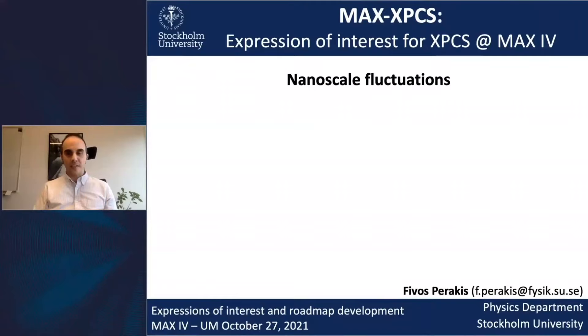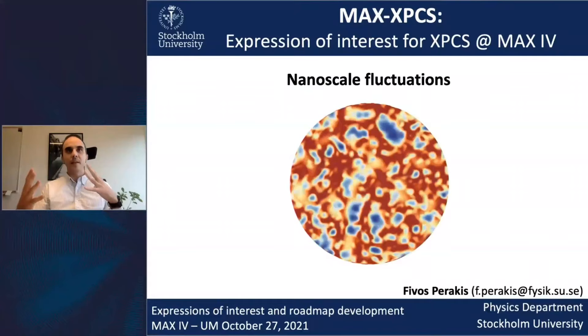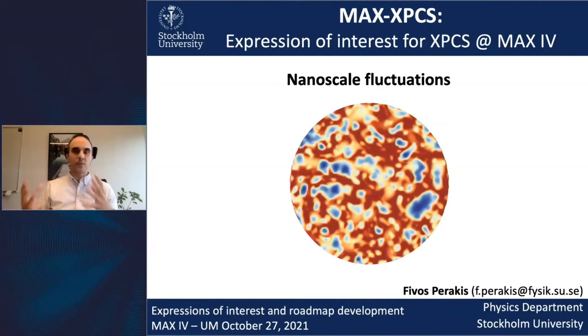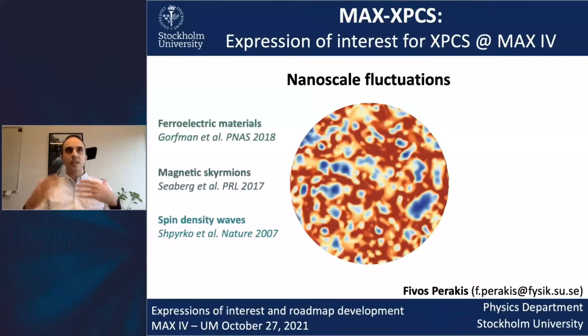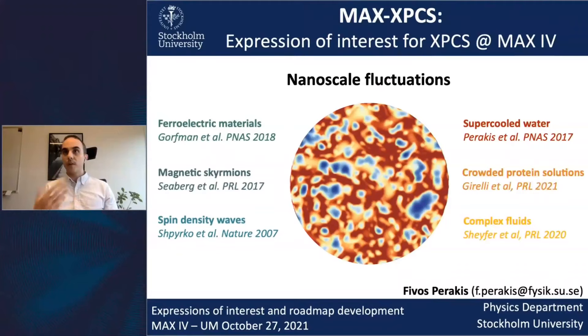You can imagine a kind of fluctuation that is happening — this could be, for example, a spin fluctuation, or a concentration or density fluctuation. That's common across many materials. In electronic materials, people have seen these things in skyrmions or charge density waves, as well as more soft matter applications like water, crowded protein solutions, and complex fluids.